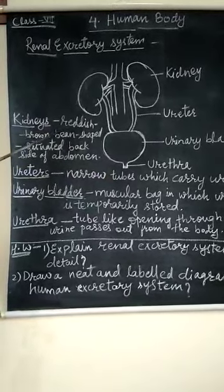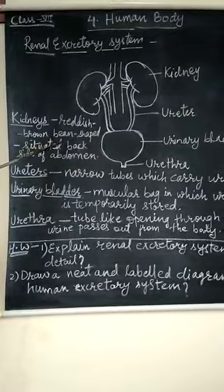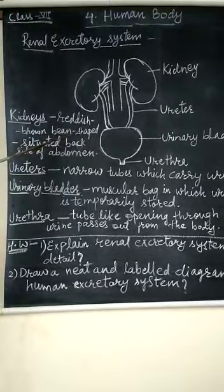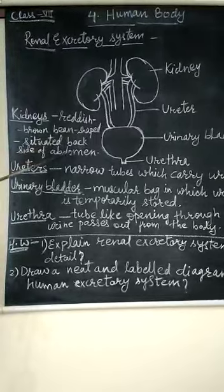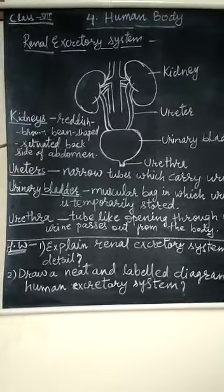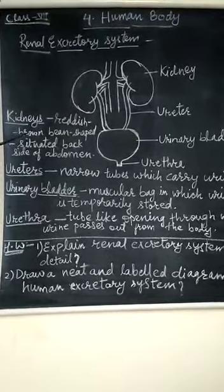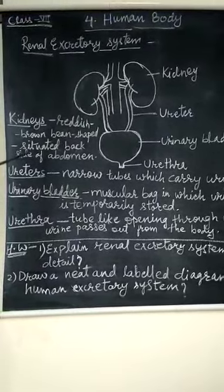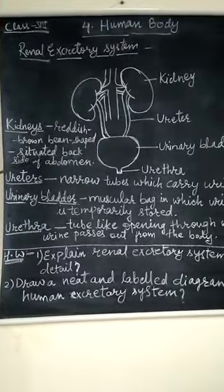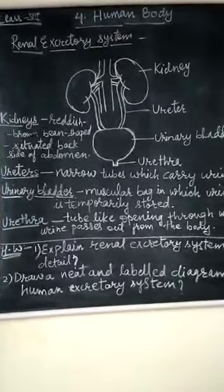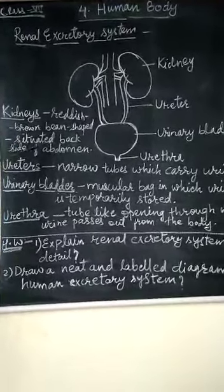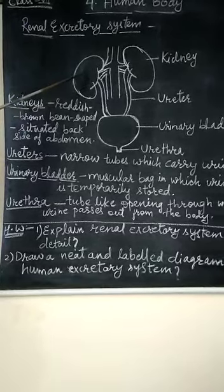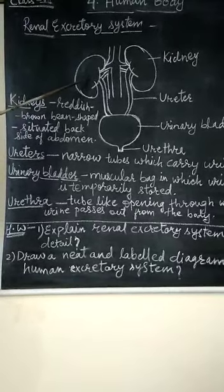Now, kidneys — these are reddish-brown, bean-shaped structures that lie on the back side of the abdomen. This means the kidney is situated towards the back side of the abdomen, one on either side of the backbone. The right kidney, as you can see in the picture, is located slightly lower than the left one.